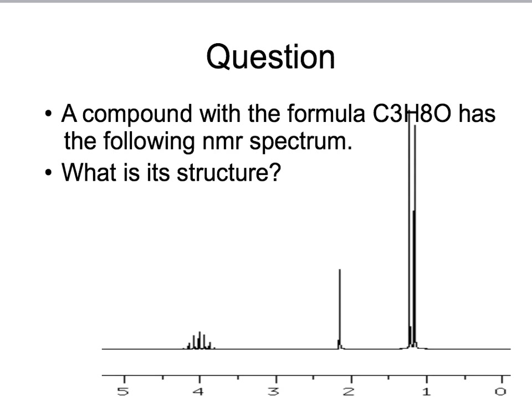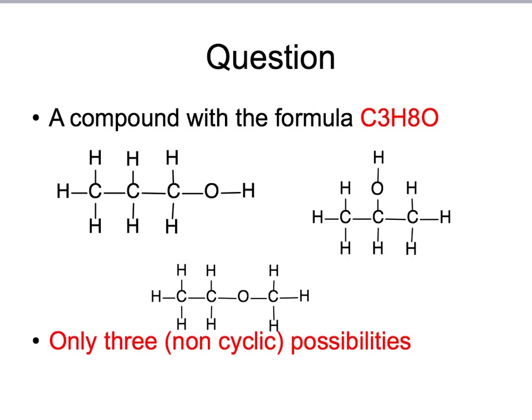So, a question. A compound with the formula C3H8O has the following NMR spectrum. What is its structure? I suggest you pause this or stop going through the slides and attempt the question on your own first before continuing. Okay, so to start how to answer this, the best way is to think what possible structures you could have. I can only think of three possible structures for this. Propan-1-ol, propan-2-ol and the ether methoxethane.